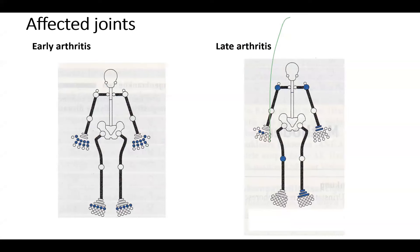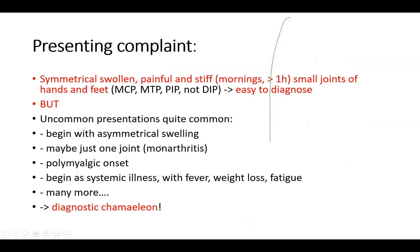Which joints are affected? This is important for diagnostics. It will usually go first in either the wrist joint, but most likely the metacarpophalangeal joints and the PIP joints — the proximal interphalangeal joints of hand and feet. In late arthritis, even other joints may be affected. But this is the typical distribution at the beginning. If you see a patient who has symmetrical swelling of MCP joints in both hands, you need to have a high index of suspicion.